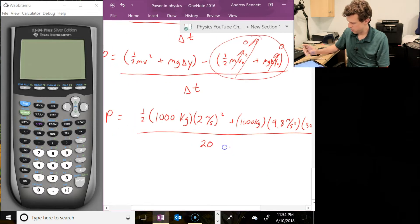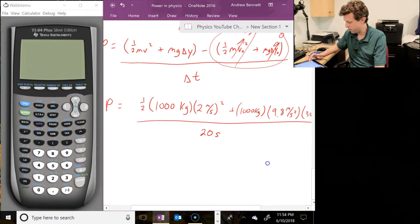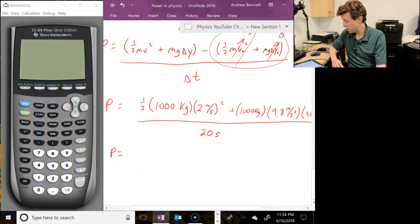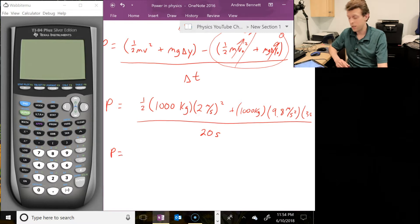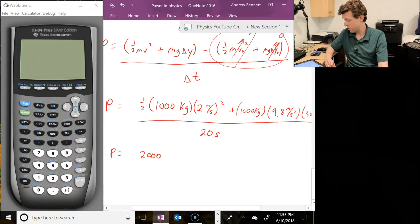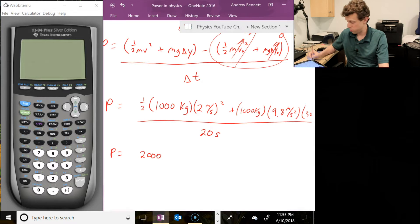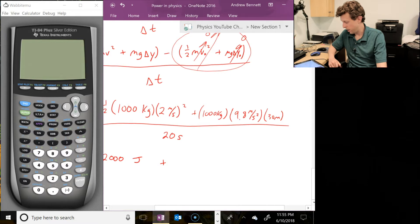All right, and since I've just got this s over here for seconds, I'm going to do that down here too. All right, so then power equals, and at this point I'm just going to calculate values for the kinetic and potential energy separately. So let's say I've got the two squared is four, the one-half takes that back down to a two, two times a thousand is 2,000, and that's kilogram meters squared per second squared, or joules. So short word, write that, joules, plus, okay, 1,000 times 30 times 9.8.